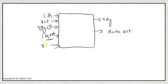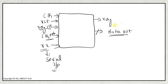RX is our serial input which we are getting from the UART transmitter, and the data output is our parallel output of 8 bits which we are getting from the receiver.